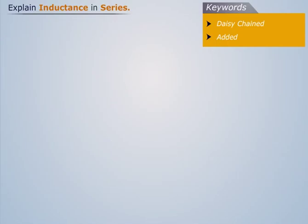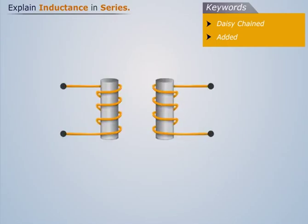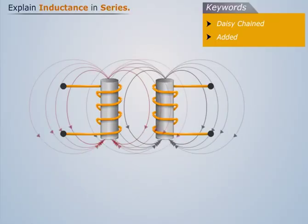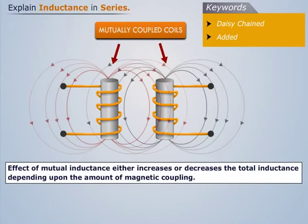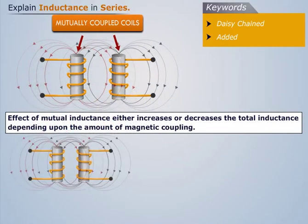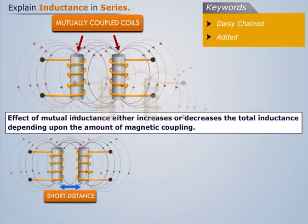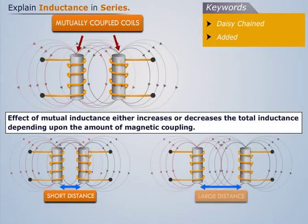When inductors are connected in series in such a way that each of its magnetic field links with the other, then the effect of mutual inductance either increases or decreases the total inductance depending upon the amount of magnetic coupling. The effect of mutual inductance depends upon the distance between the coils and their orientation to each other.